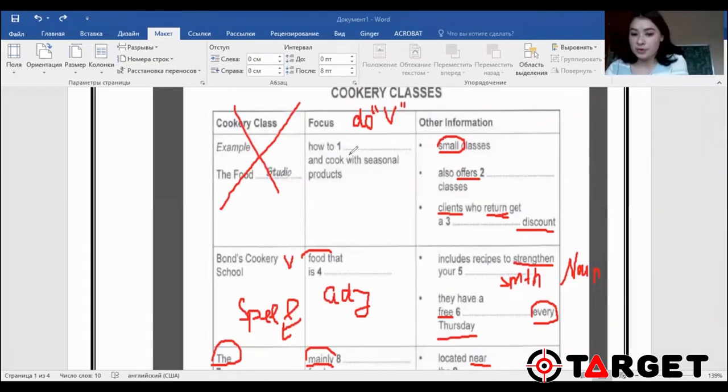Question number one, we should first of all focus on what type of word we should put in it. Is it adjective, verb or noun? Number one, how to, so logically we're going to put a verb. How to do something and cook with seasonal products. That's why I'm going to put a verb in here.